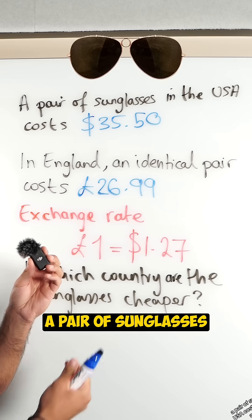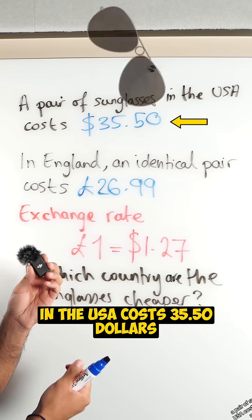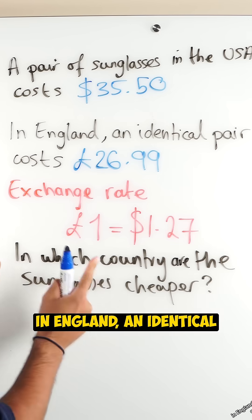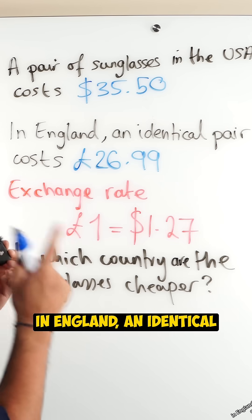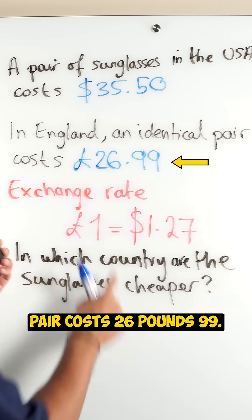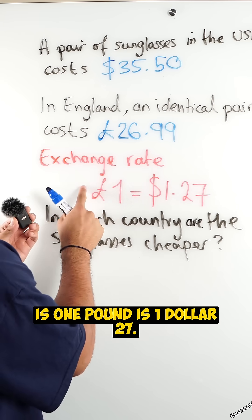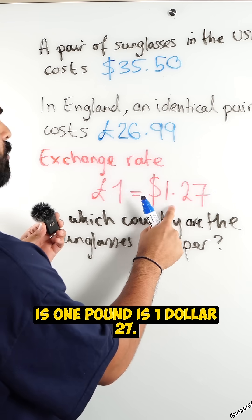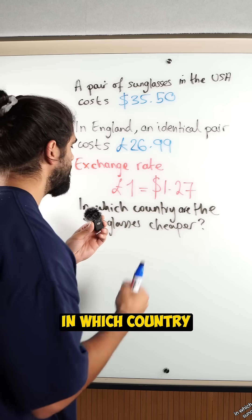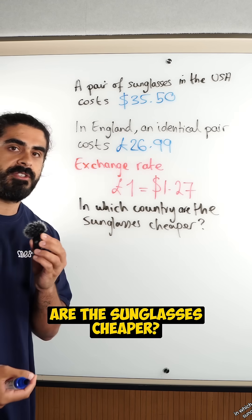A pair of sunglasses in the USA costs $35.50. In England, an identical pair costs £26.99. The current exchange rate is £1 is $1.27. In which country are the sunglasses cheaper?